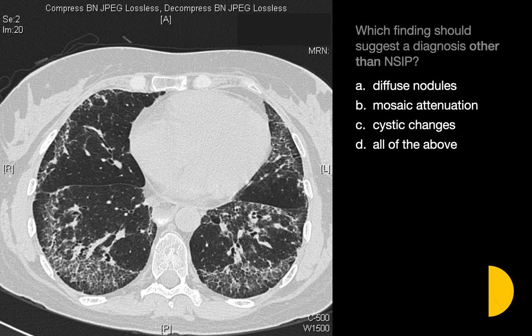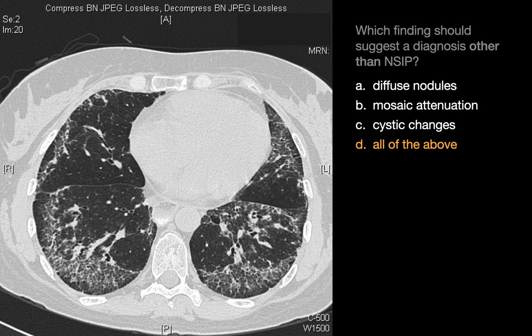Which findings should suggest a diagnosis other than NSIP if you see it? The answer here is all of the above. Diffuse nodules, depending on whether centrilobular or perilymphatic/bronchovascular distribution, would open up differential diagnostic concerns such as respiratory bronchiolitis, hypersensitivity pneumonitis, chronic infections, pneumoconiosis, and sarcoidosis. With a mosaic attenuation pattern, you'd begin to think of air trapping — things like hypersensitivity pneumonitis. With cystic changes, you think about all the cystic lung diseases — LIP, LAM, LCH, for example.